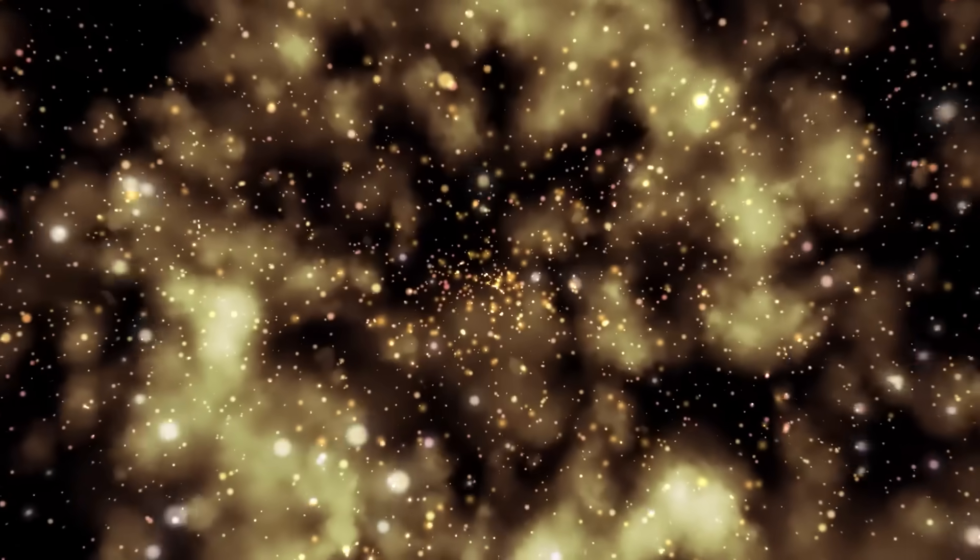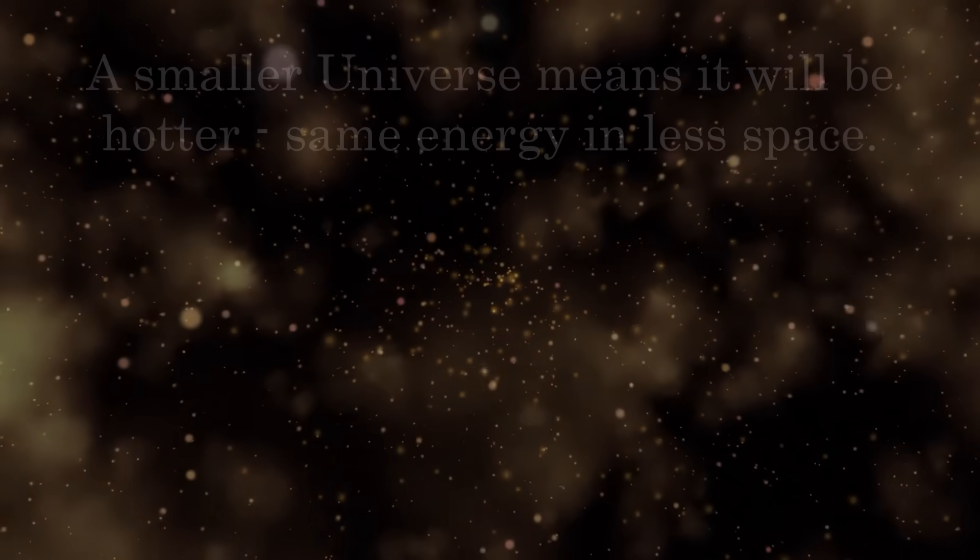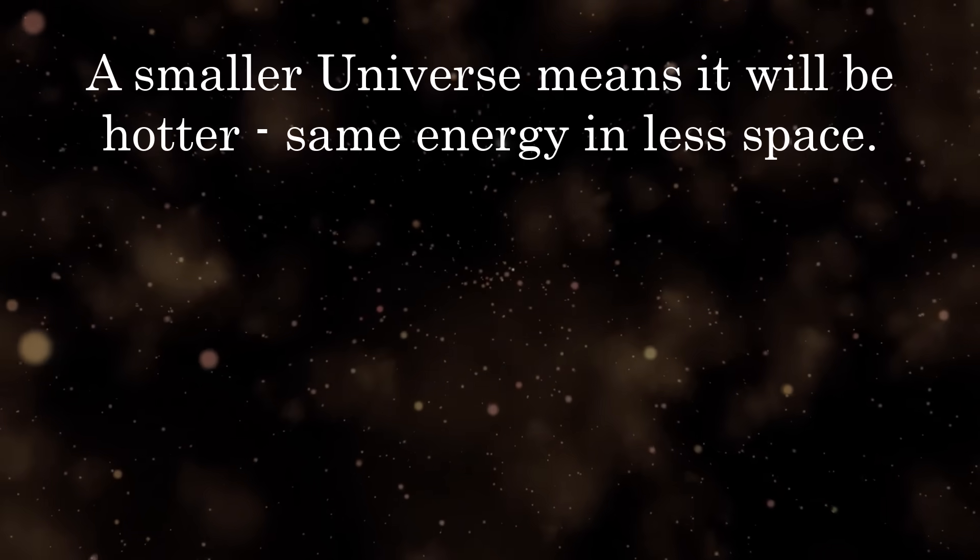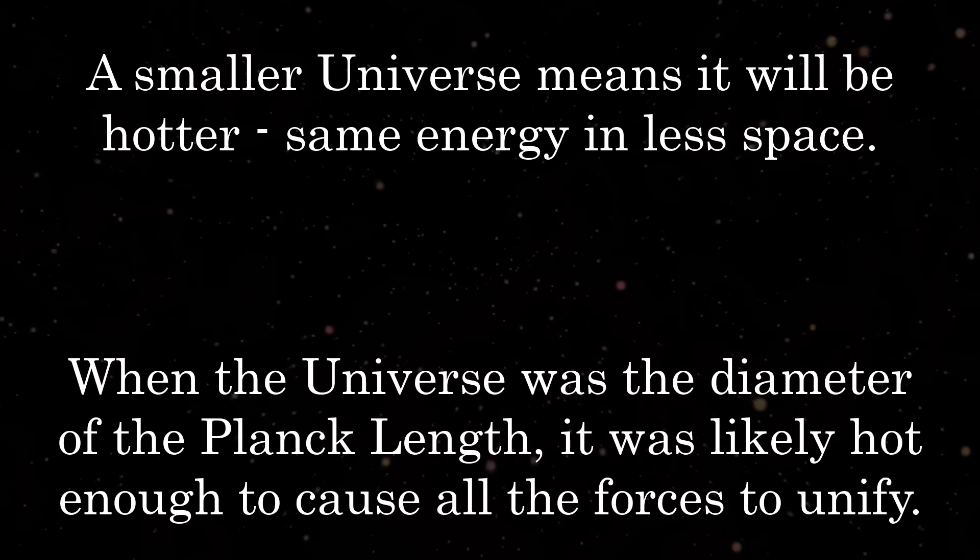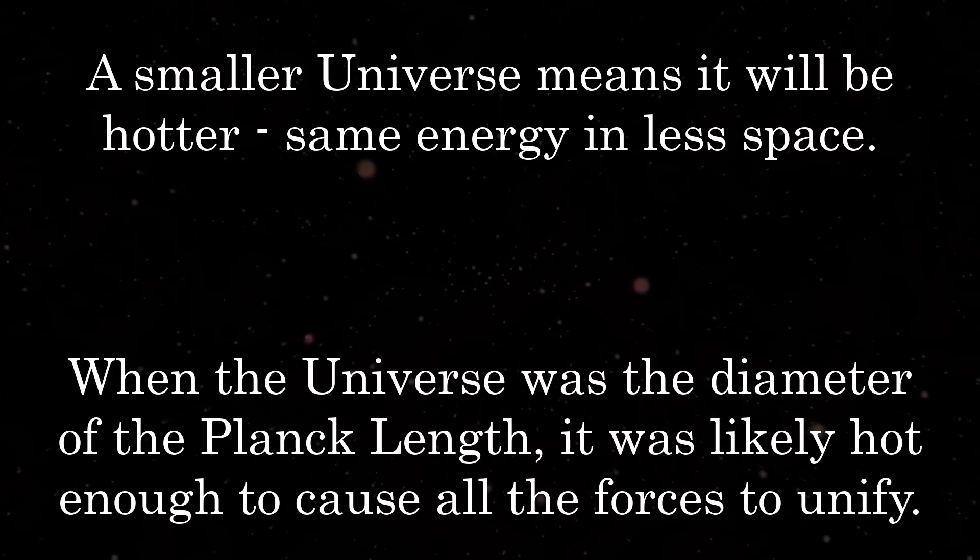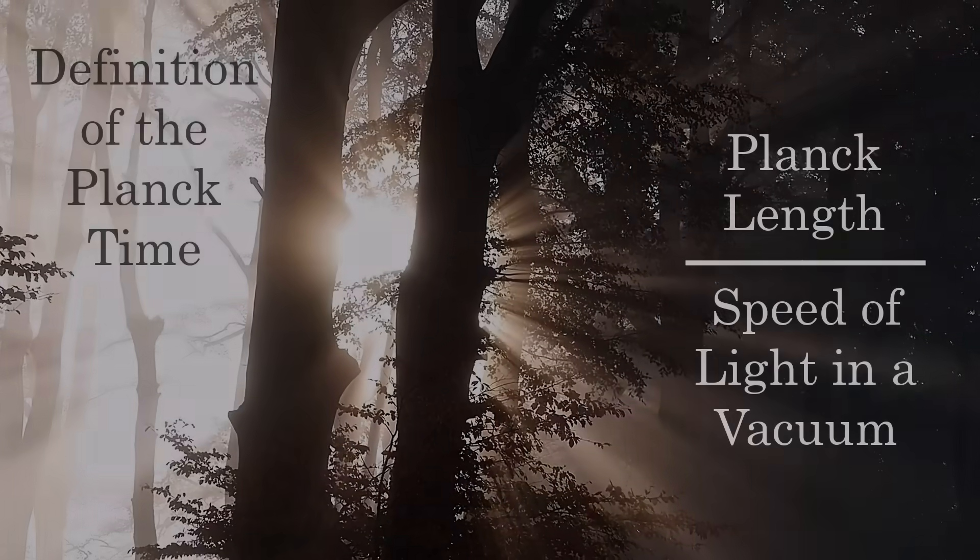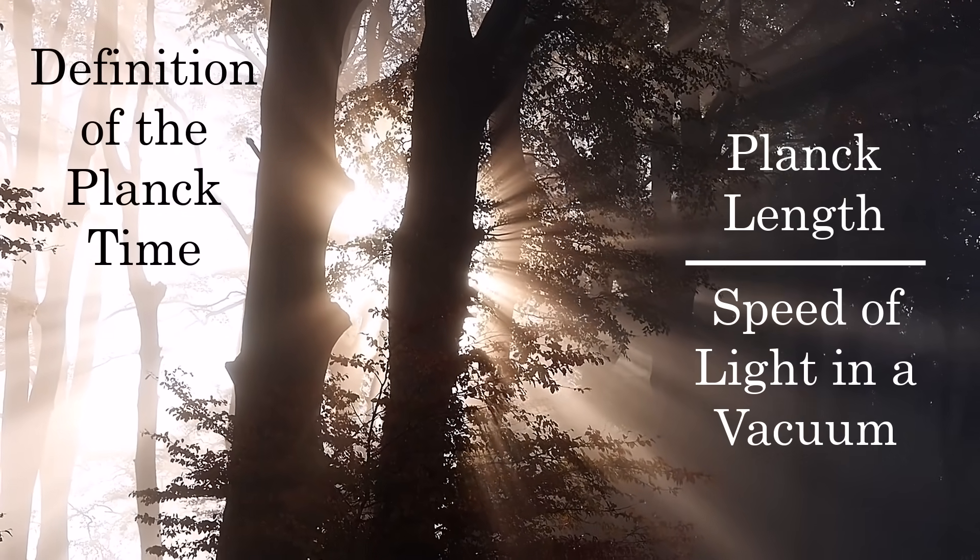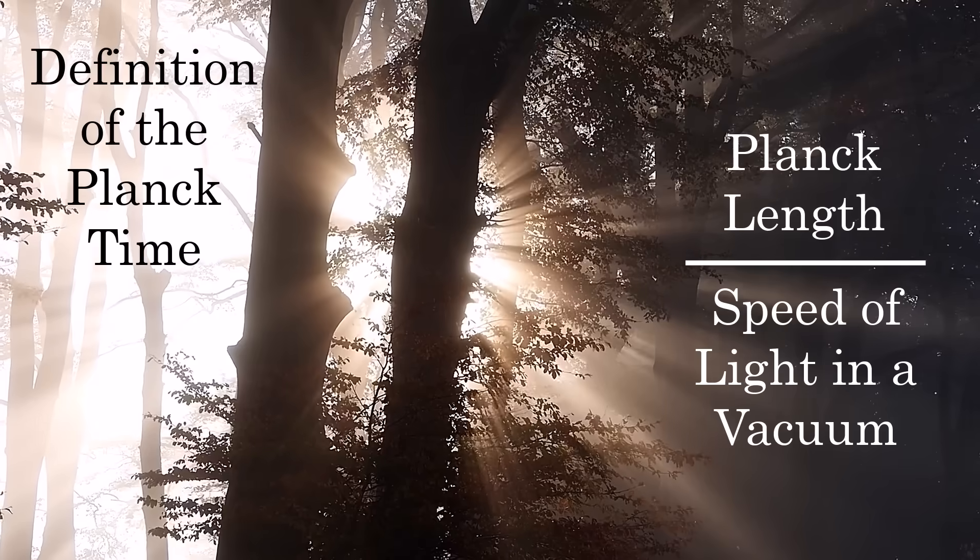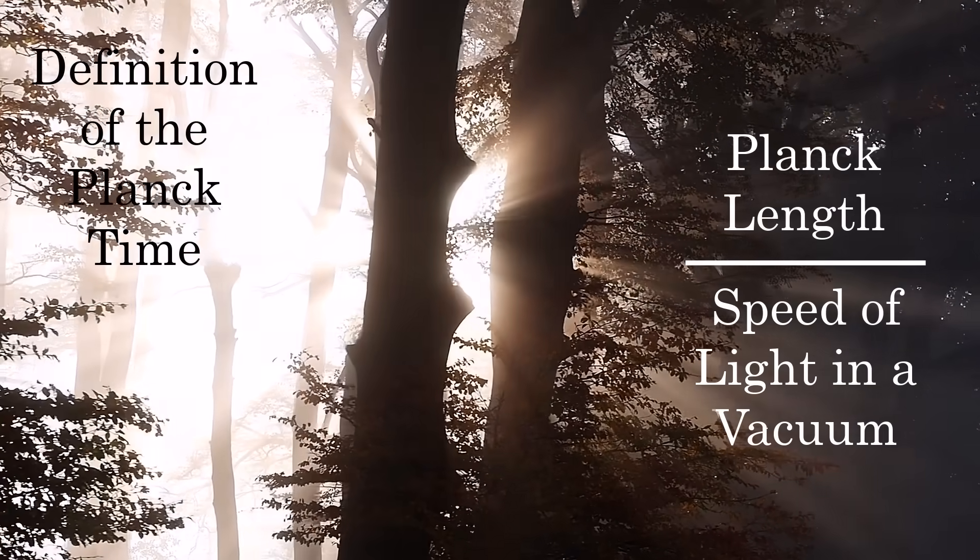We know the universe is expanding, so at early times it's reasonable to assume that it must have been much smaller than it is today. At the epoch where the universe had the diameter of the Planck length, the amount of energy confined in such a small volume would have almost certainly been governed by a unified force, leading back to the necessity of a theory of quantum gravity. The time it takes light in a vacuum to travel the Planck length defines the Planck time. Once the universe was one Planck time old after the big bang, symmetry breaking occurred and gravity split from the grand unified force.